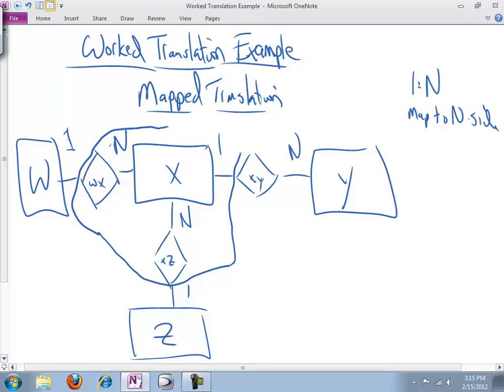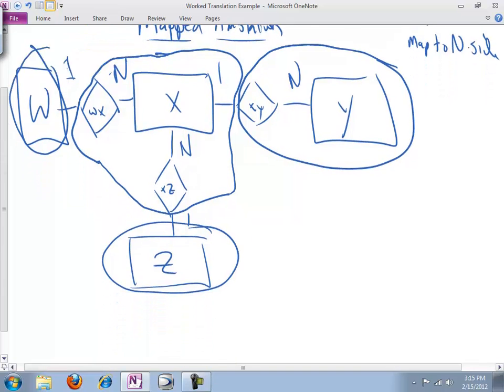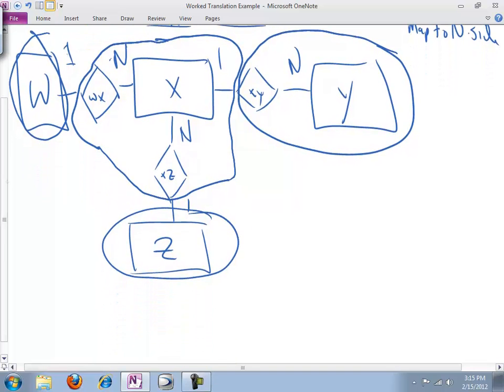So, we will not, in that case, map the relationship. The relationship will be included here in Y. Okay. And then, of course, we will have a separate W table and a separate Z table. And what that looks like in terms of relational schema, let's do the easiest ones first, which is W and Z.